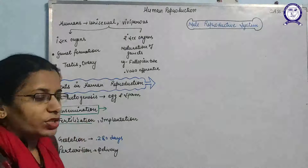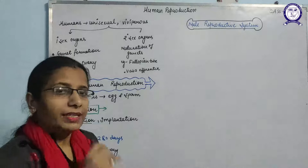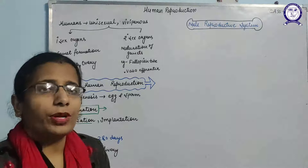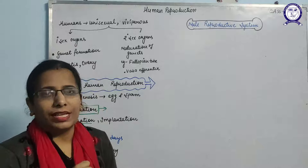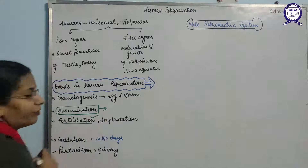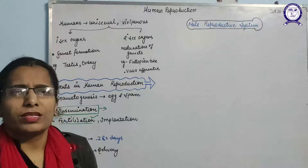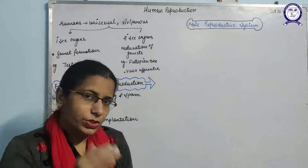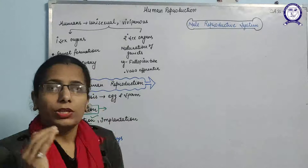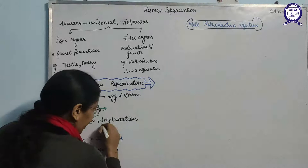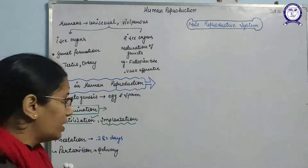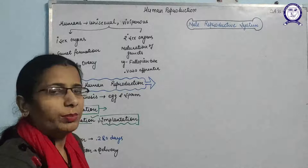After insemination, the sperm passes through the female genital tract and reaches the fallopian tube. In the fallopian tube, there is a part known as the ampulla — the ampulla is the part where fusion of the gametes, that is, sperm and egg, takes place. That process is known as fertilization. After fertilization, the zygote forms, which develops into blastomeres, morula, and then blastocyst. The blastocyst reaches the uterus and attaches to the inner lining called the endometrium, which is known as implantation.